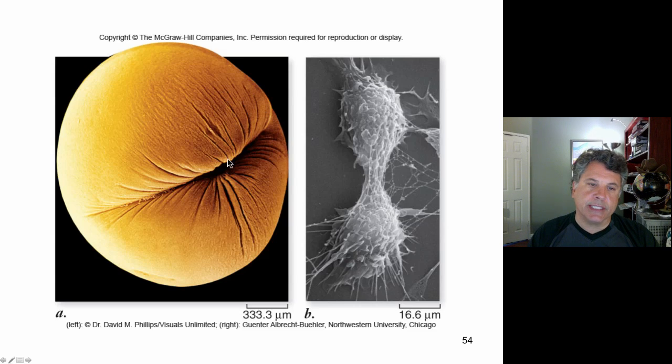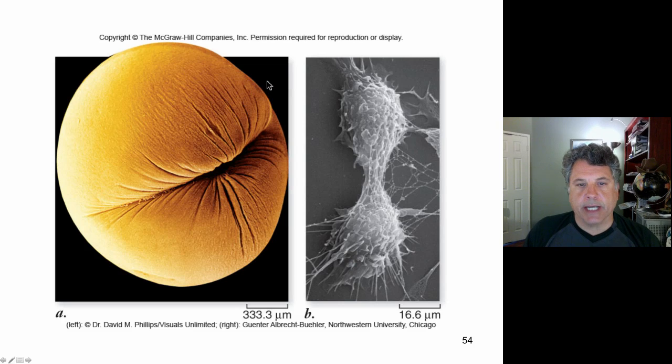Here's an animal cell and this is a cleavage furrow that is forming in a frog egg after fertilization. A frog zygote I should say. And this is the first division of the zygote into two cells. This was a fertilized egg cell and now it's being divided into two daughter cells at the first mitotic division of the zygote.